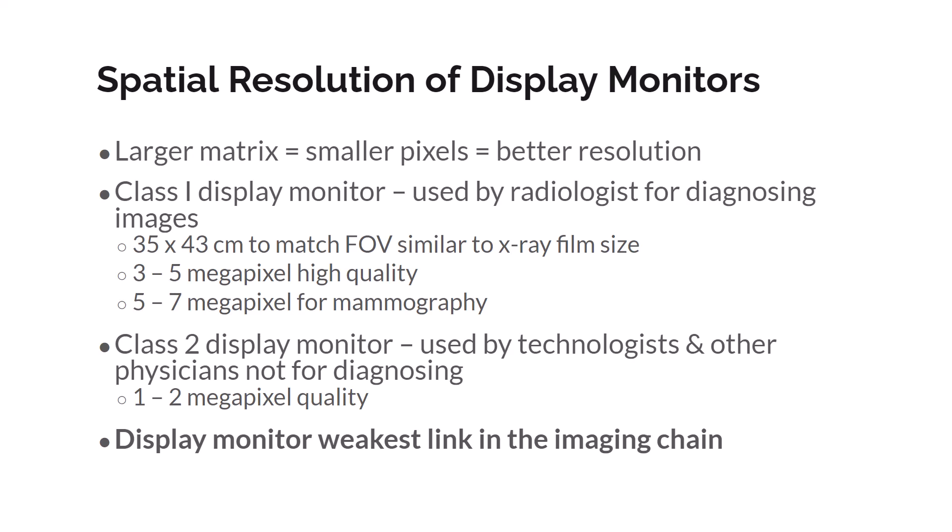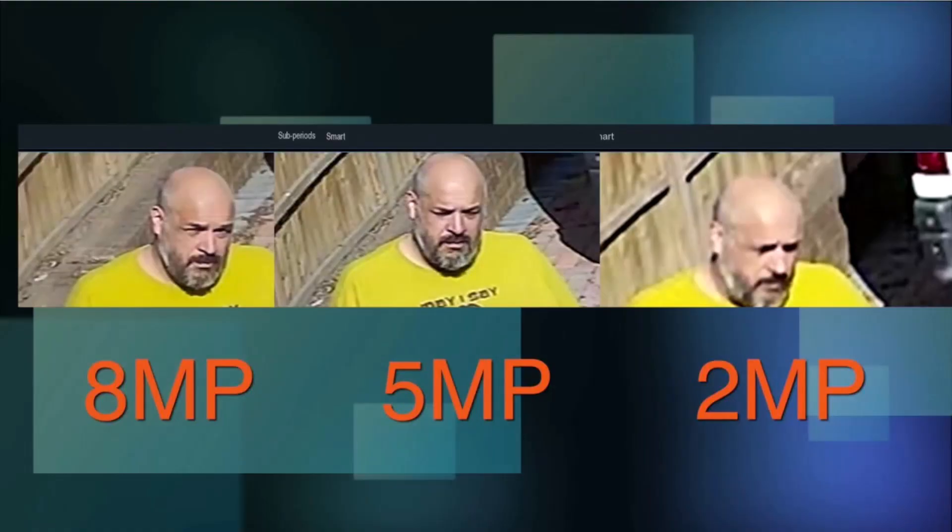Most importantly, the display monitor is the weakest link in the imaging chain. The detector is the strongest link, meaning its resolving power is more powerful than most of the monitors used for viewing images outside of the radiologist's workstation. This last slide shows variation in image quality in terms of resolution, with 8 megapixels being the highest and 2 megapixels being the lowest. Depending on the monitor you're watching this video on, it may influence how clearly you're seeing these images. Remember: radiologists use Class 1 monitors with 5 to 7 megapixel resolution, and technologists use Class 2 monitors with 1 to 2 megapixel resolution.